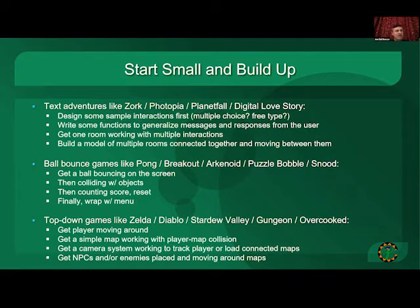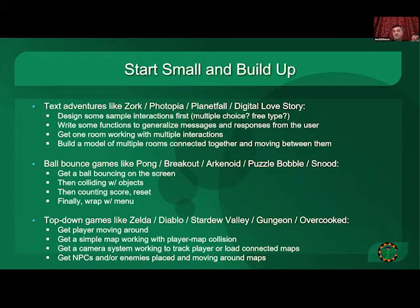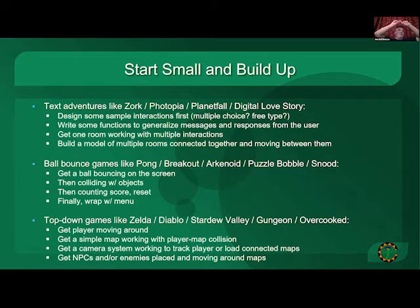For top-down games — Zeldas, Diablos — or shooters like Galaga and 1942, get an entity/avatar moving around on the screen first. Press the right arrow, it goes right, only to the edge of the screen. Then get another entity in and get collision or shooting working. Focus on that functionality, get it to feel and look good, then think about a map system — how to link screens together, or a camera that follows the player. We used to do tile engines, building up piece by piece. Any game you're going to make, start small and build up.